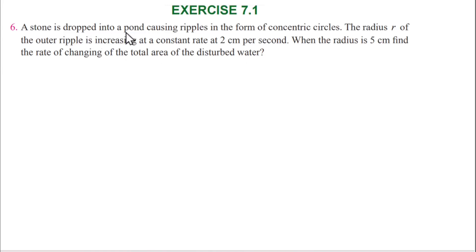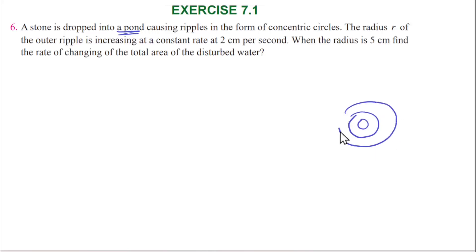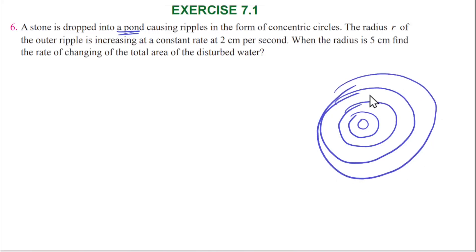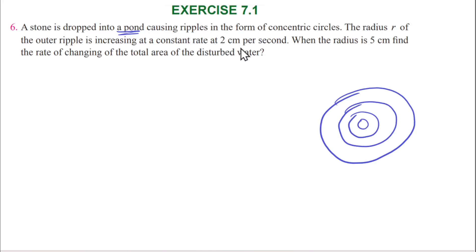So when a stone falls into a pond, it creates ripples in the form of concentric circles. The ripples are increasing — the radius is increasing at 2 cm per second. The radius at the moment we are considering is 5 cm.